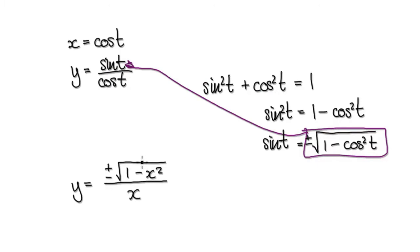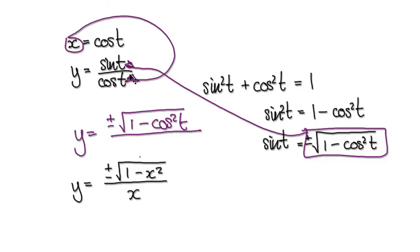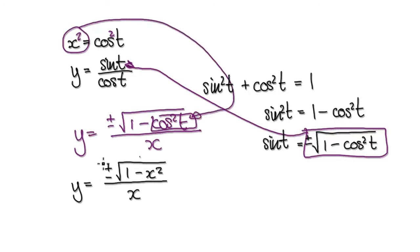Substituting in, that would then give us plus or minus the square root of 1 minus cos squared t, divided by cos t. We can put x in for cos t. Now we can replace cos squared t — if you square both sides of x equals cos t, that gives you x squared equals cos squared t. So you can now put x squared into here, which takes you to the final Cartesian form: y equals plus or minus the square root of 1 minus x squared, divided by x.